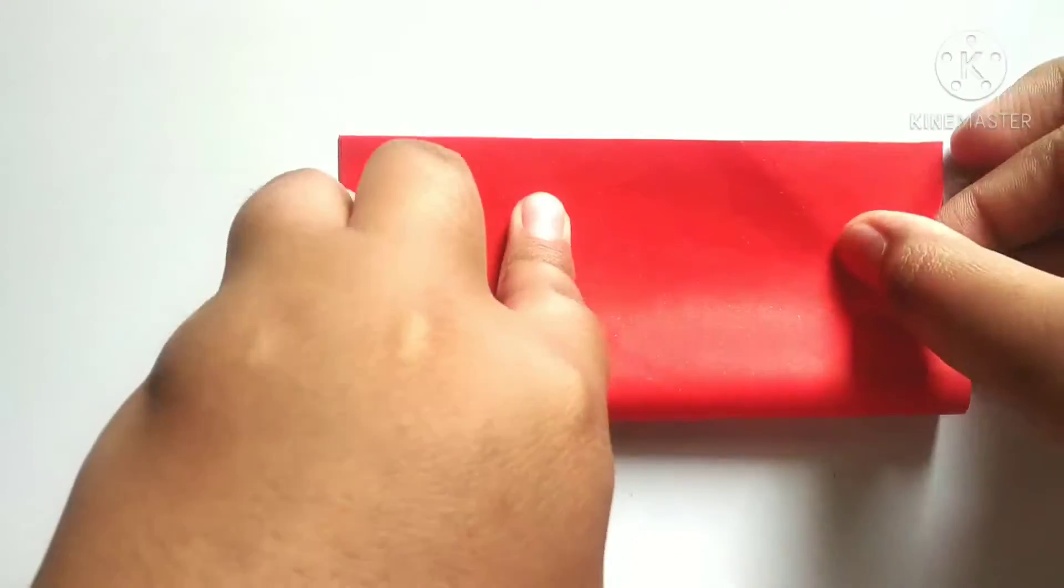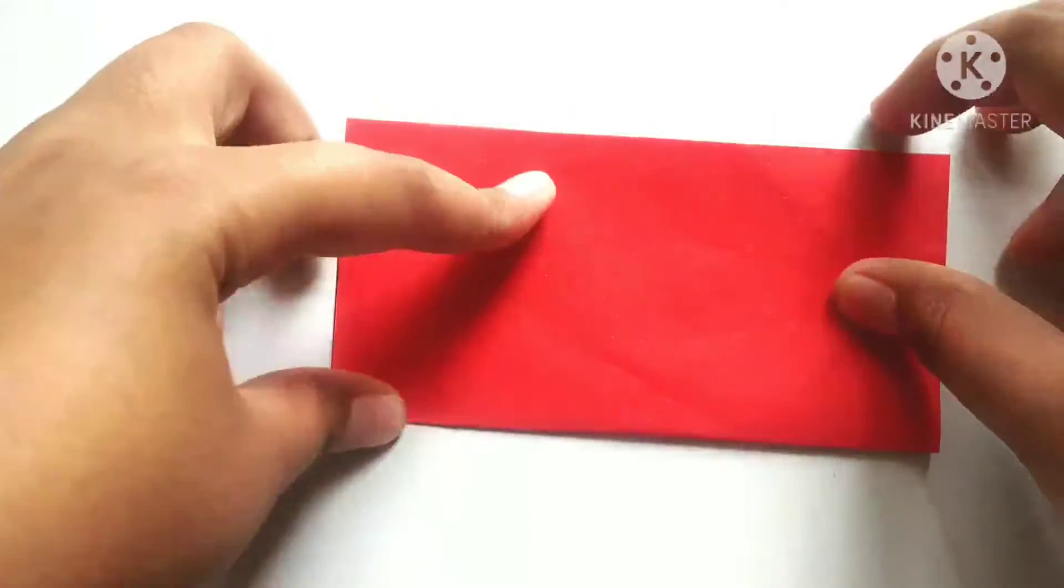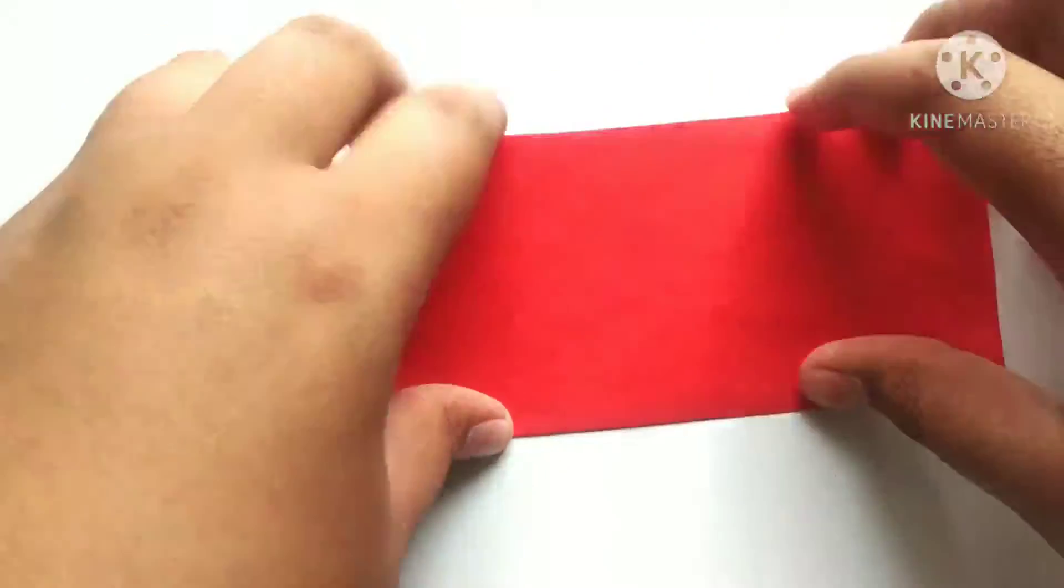Friends, for making an origami bow, we need to take one square paper and fold it half. And we need to fold another half too.